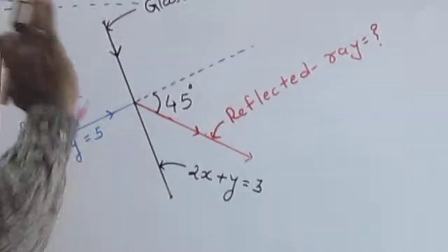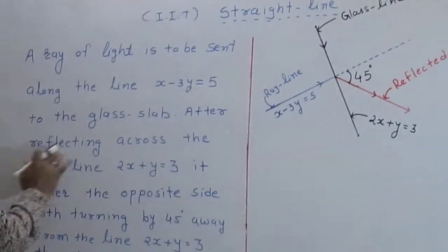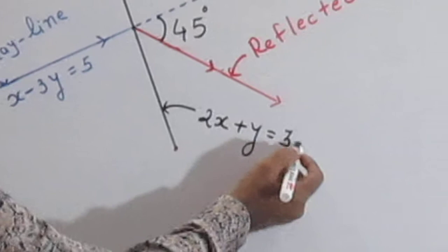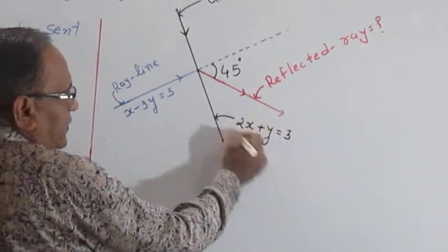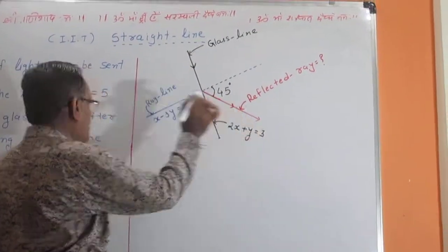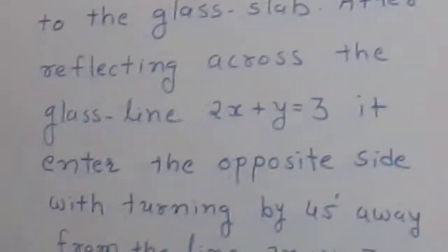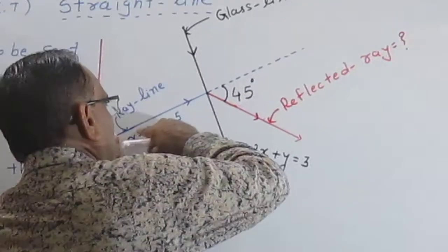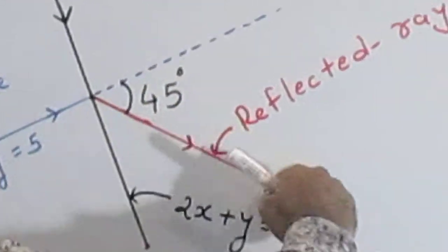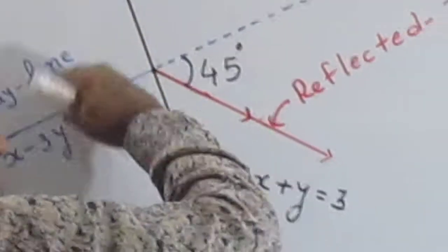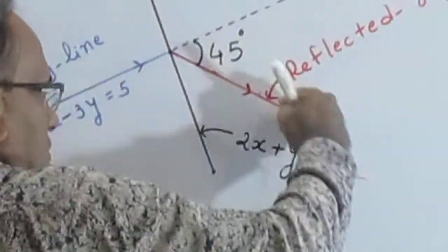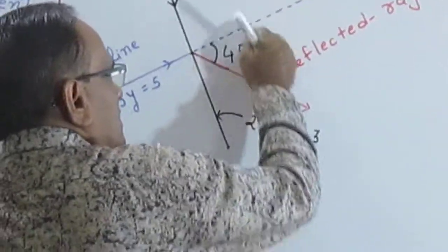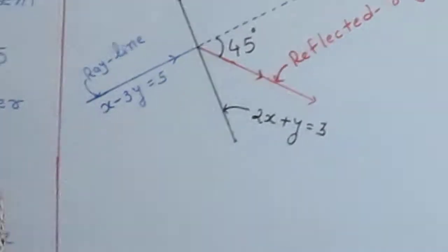We consider this is the glass line here. After crossing the glass, the glass line equation is 2x plus y is equal to 3. The line equation for the glass is 2x plus y is equal to 3. Here it enters the opposite side, turning by 45 degrees. The ray line is turning by 45 degrees because the medium is changed here, so the deviation is 45 degrees.